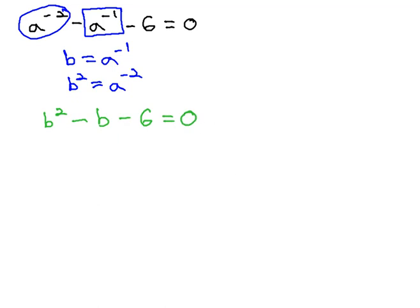And that gives us a quadratic that we're familiar with solving, probably by factoring, where we multiply to negative 6 and add to negative 1.